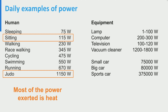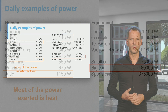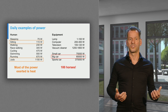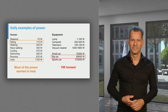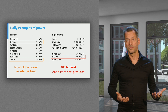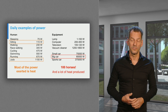Most of the 1,150 watts is emitted as heat. On the right-hand side, you see the power of some forms of equipment. Through LEDs, lighting has become up to 95% more efficient compared to old-fashioned light bulbs. Mind that a big car requires enormous power — about 100 horses. That's quite a carriage. And again, a lot of heat is produced when exerting this power.